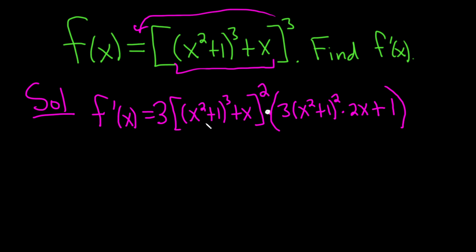Bring down that 3. You get x squared plus 1, squared, and then times the derivative of the inside. So the derivative of x squared is 2x. Derivative of 1 is 0. It doesn't matter. And then plus, the derivative of x is 1. And that's it.